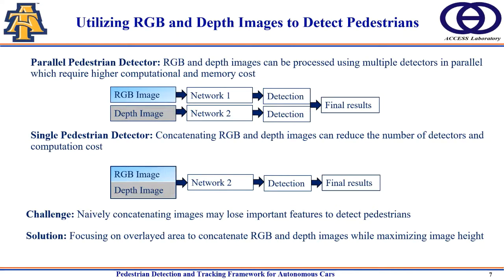The challenge is how to concatenate the images so that we do not lose any important information. We must ensure that the RGB image and depth images overlap the areas that are most important. We tried different concatenation methods and found that vertical concatenation is better compared to horizontal concatenation.